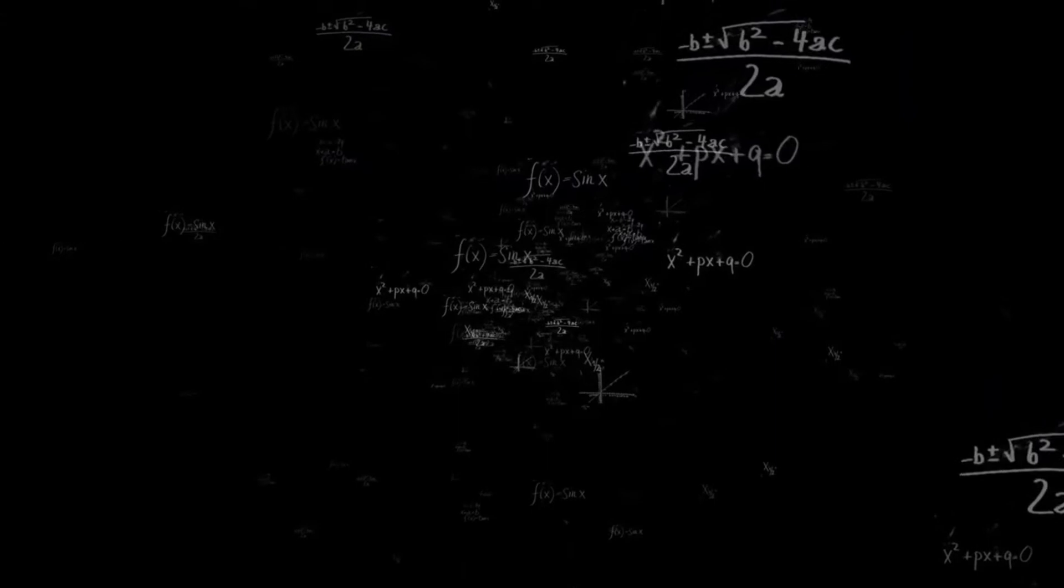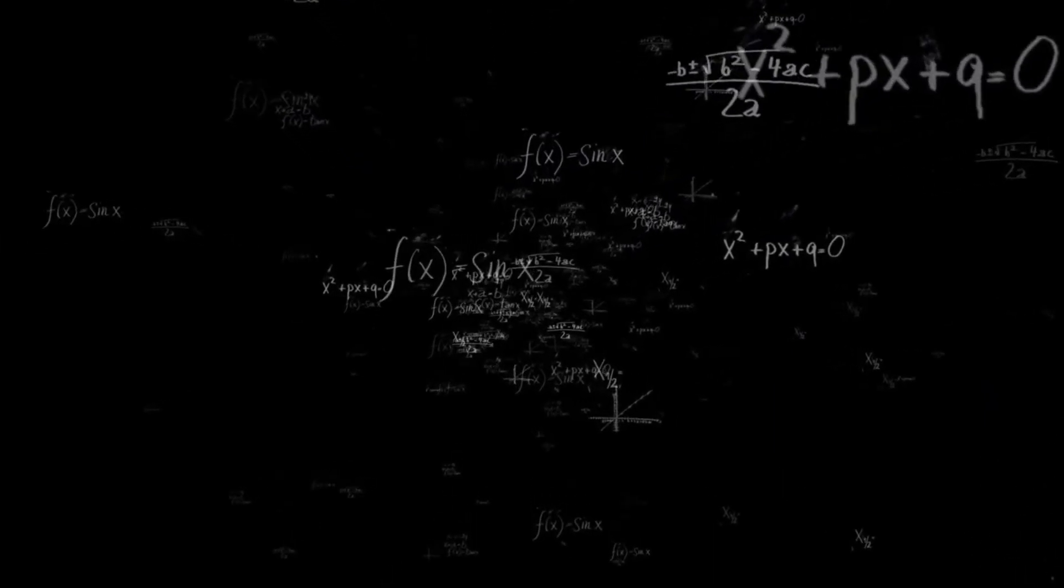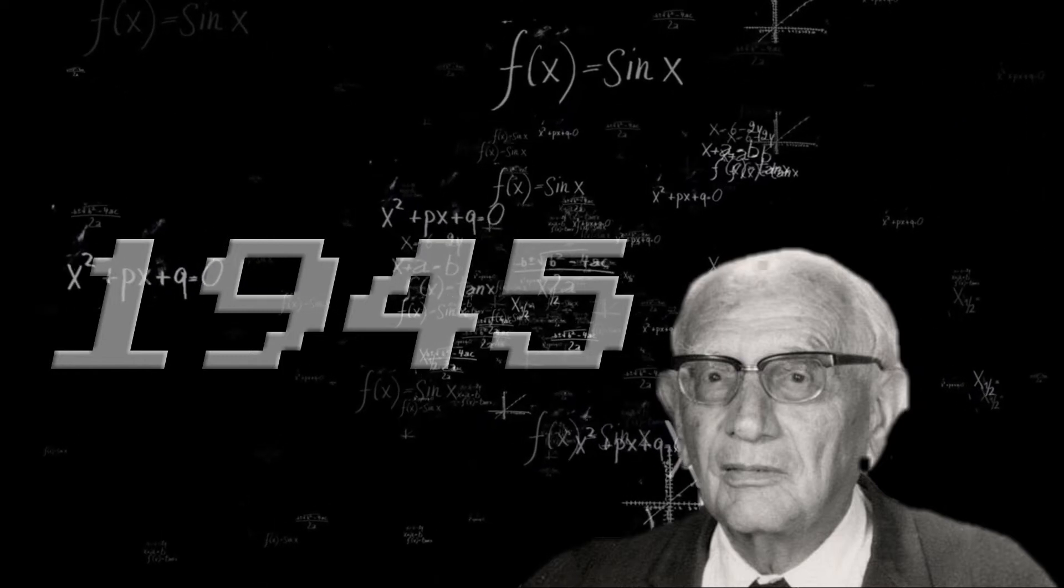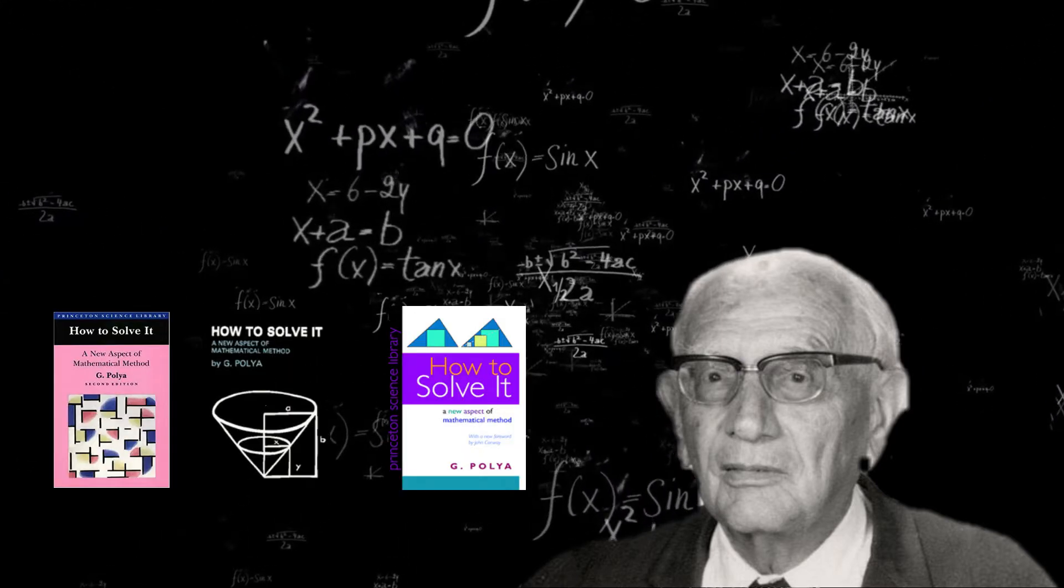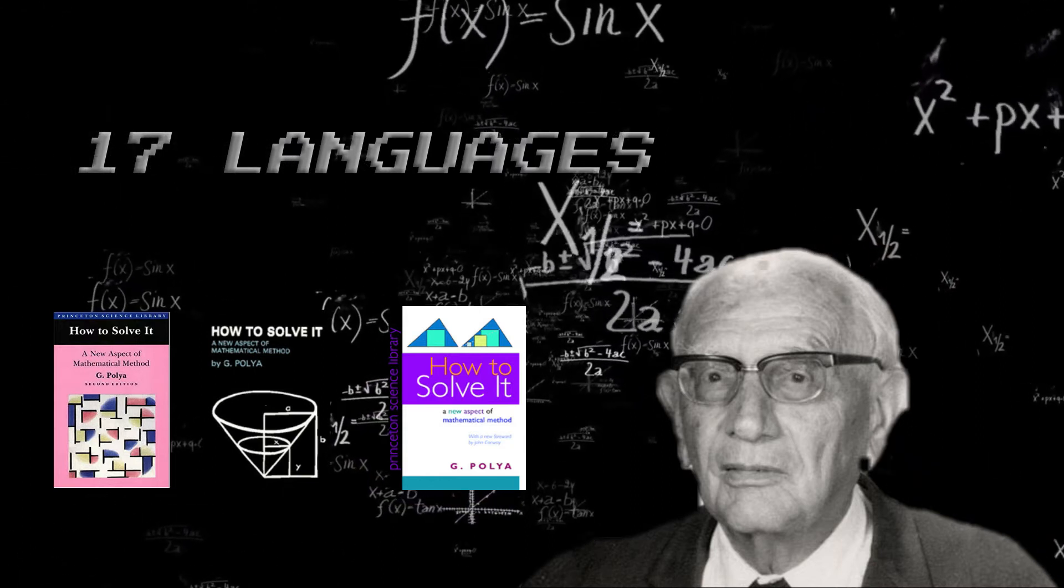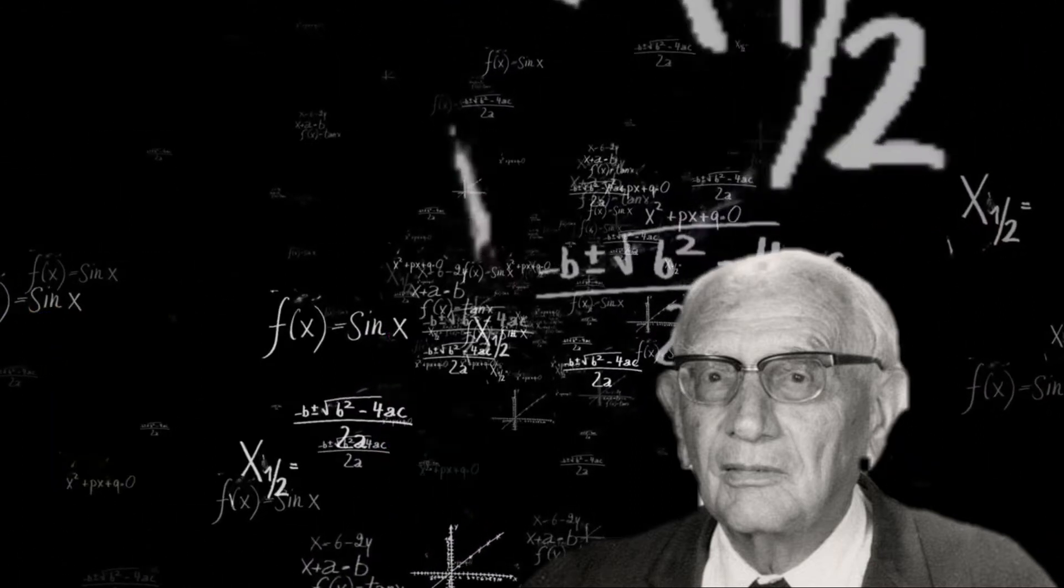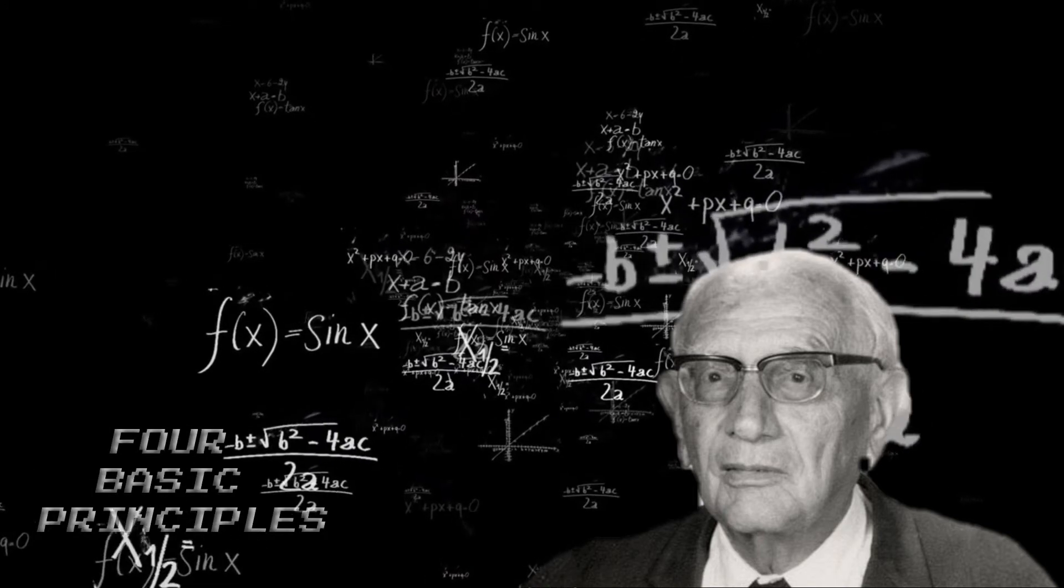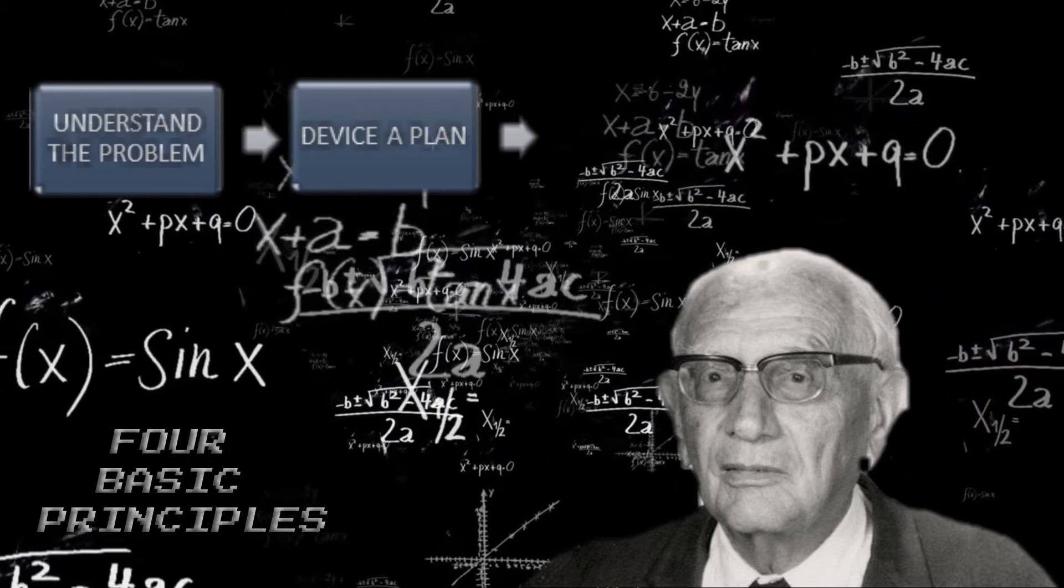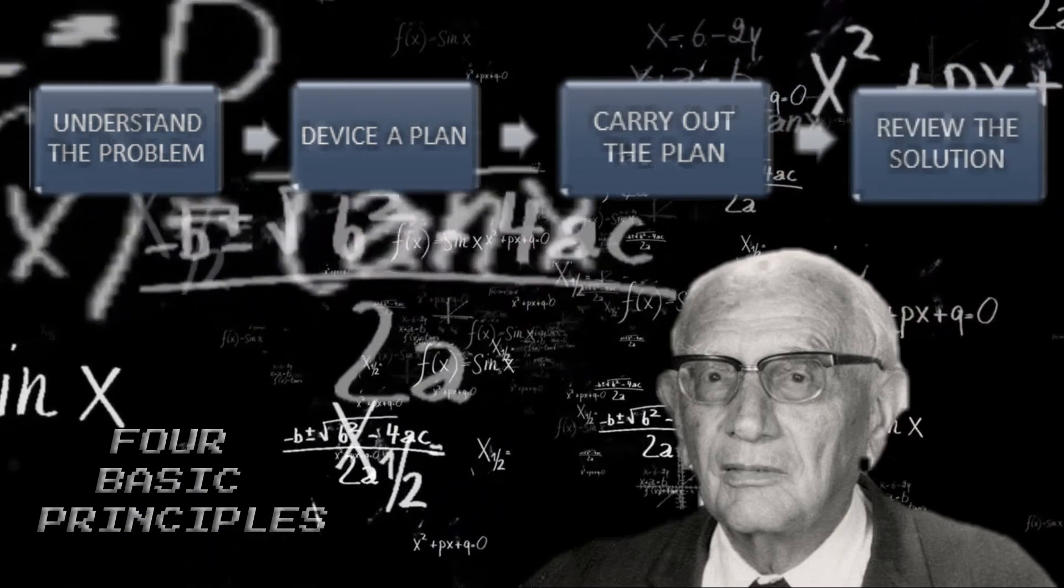Polya's Problem Solving. In 1945, George Polya published a book named How to Solve It, which translated into 17 languages and became his most prized publication. In his book, he implies the four basic principles: understand the problem, devise the plan, carry out the plan, and review the solution.